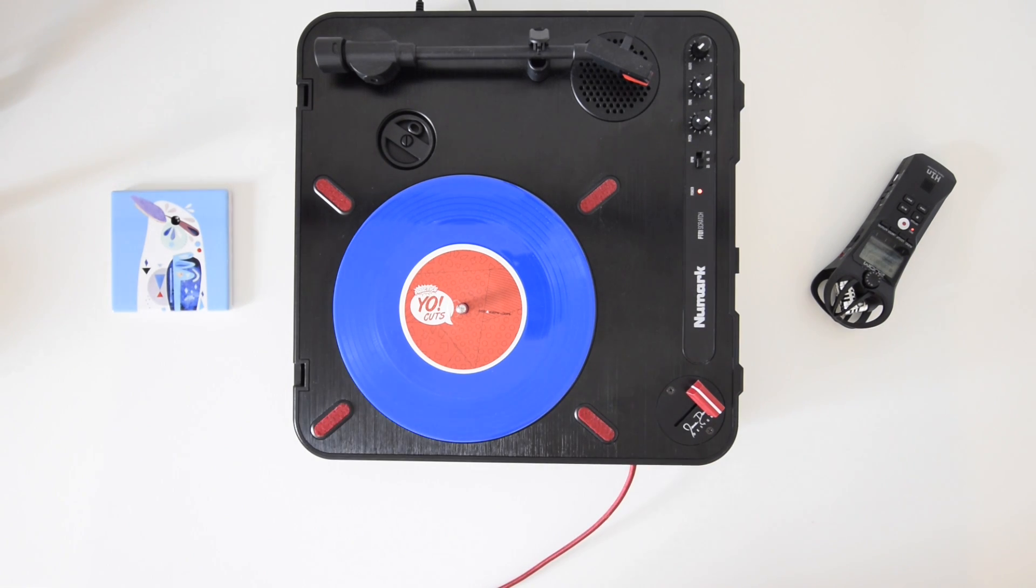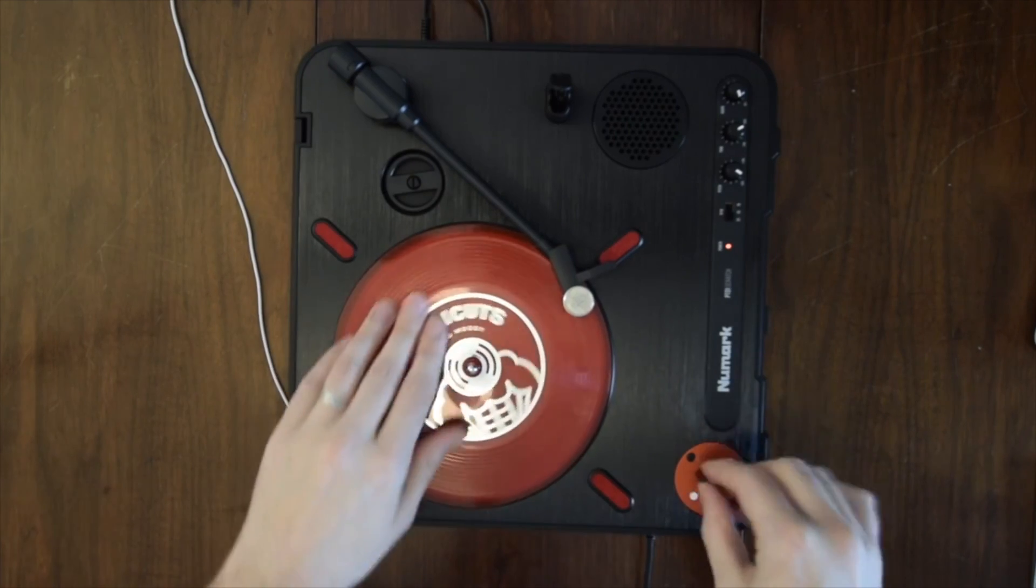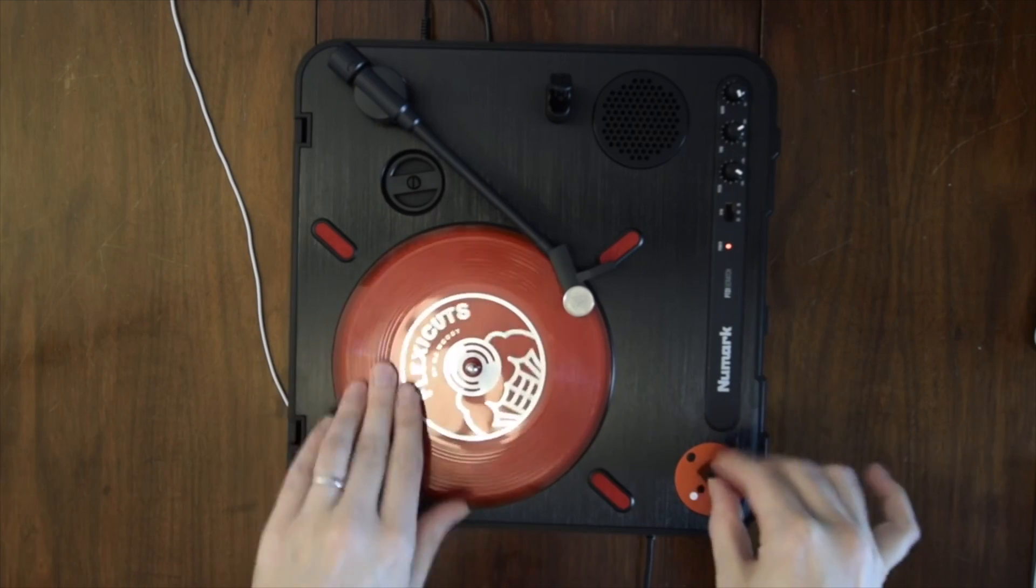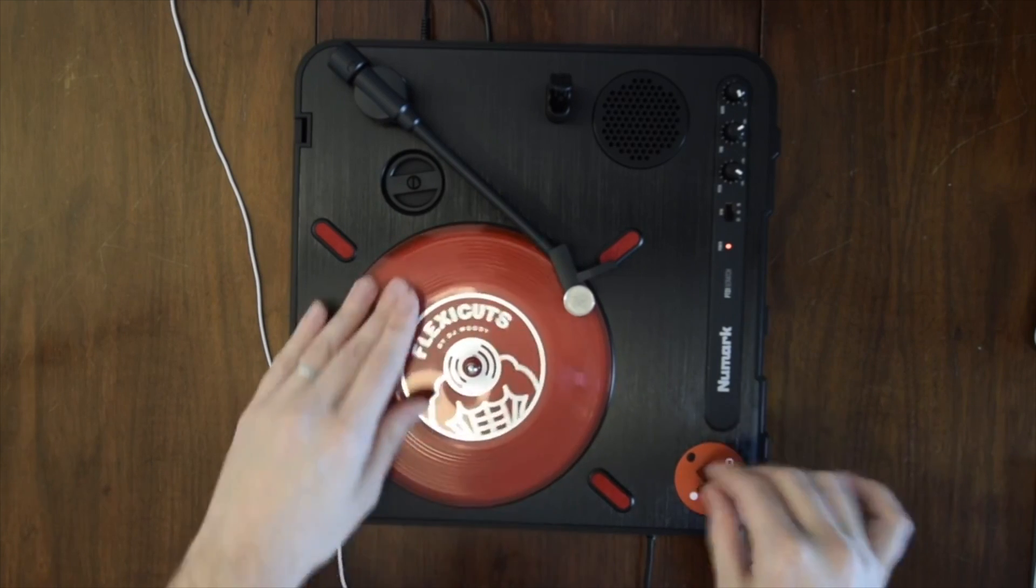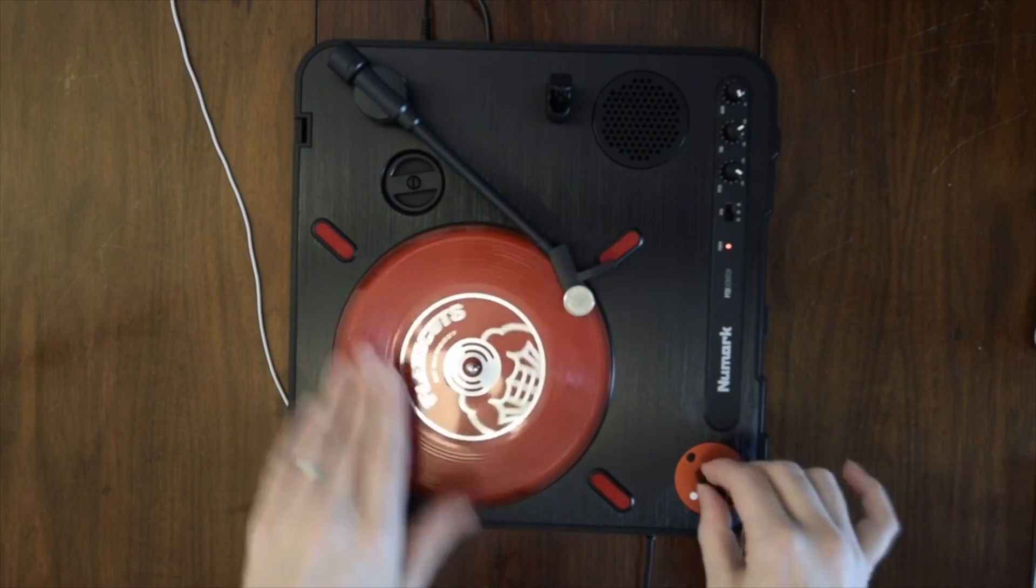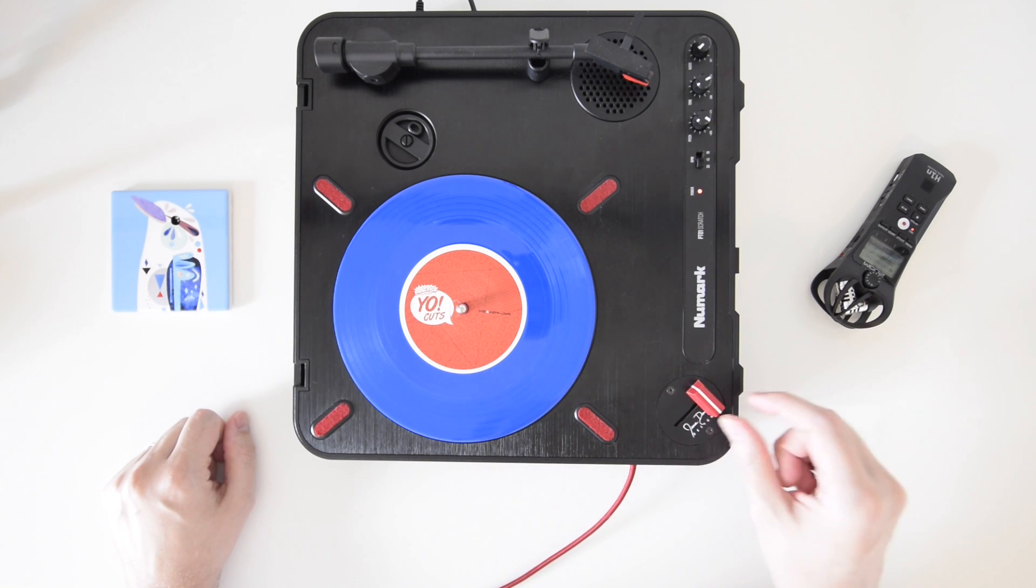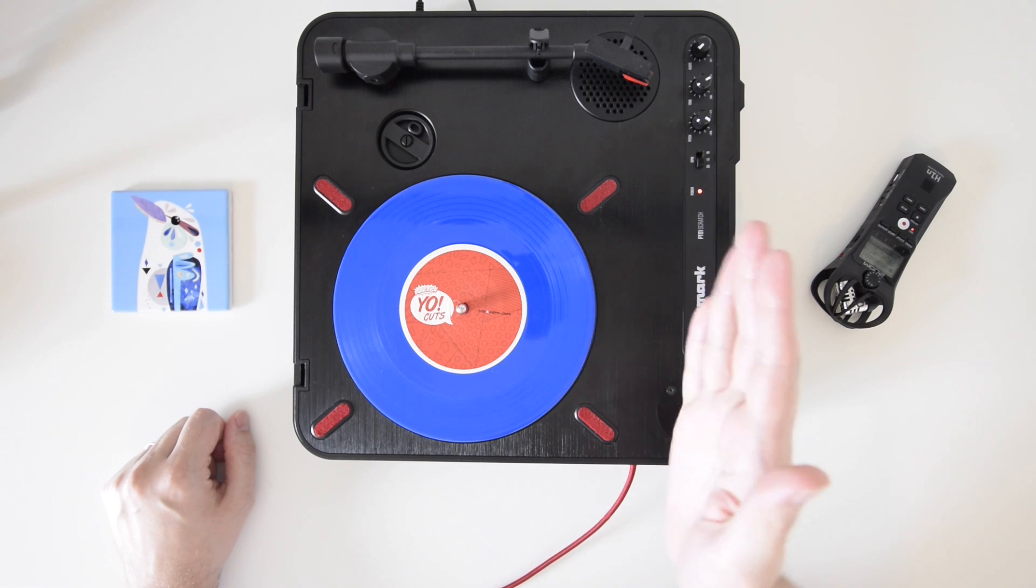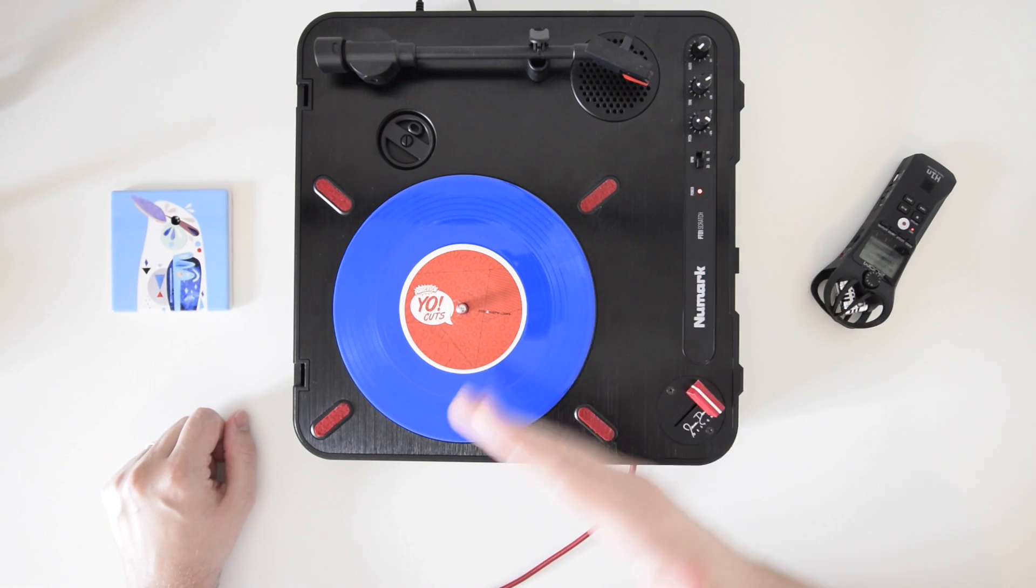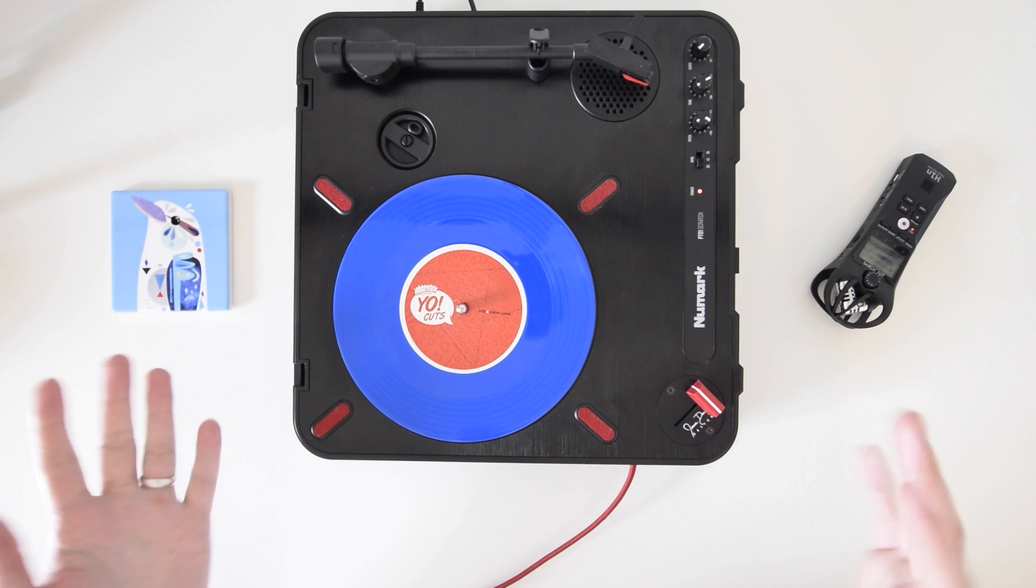So the first mod that I did, which is probably the first mod that everyone does, was upgrade the fader. Now the PT01 scratch comes with what they call a fader switch and in my opinion for someone just starting off it's definitely good enough. The main reason people don't like this switch is, as you can probably tell from the name, it's not a traditional fader that moves back and forth but a switch which pivots. There's nothing inherently wrong with this but if you've learned to scratch with a fader it just feels a bit weird.